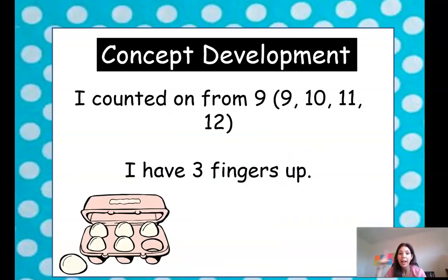You can count on from 9. So you could say 9 in your head and count up to 12. So 9, 10, 11, 12. And then look how many fingers you have up. 1, 2, 3. 3 fingers up. That means there's 3 eggs left.